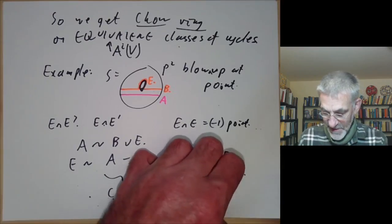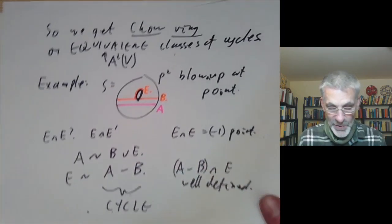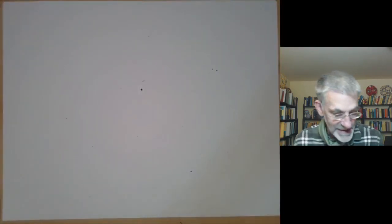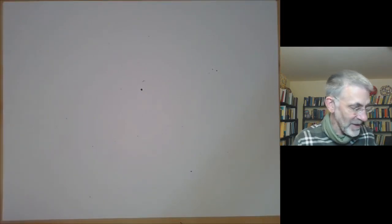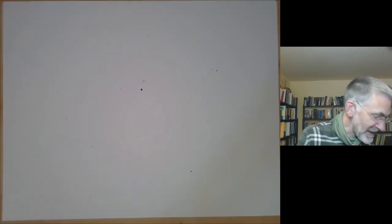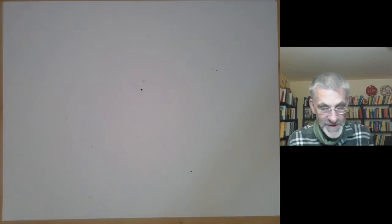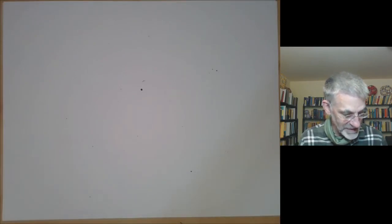Chow's moving lemma doesn't say you can deform sub-varieties — it says you can deform cycles. And even if you start with a cycle with positive coefficients, its deformation might pick up negative coefficients. That's because the intersection number of E with itself is negative, equal to -1 times a point, which forces negative signs to appear when you deform E into a well-behaved cycle.